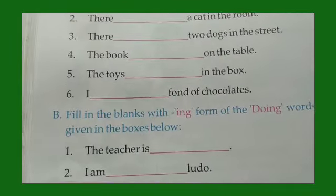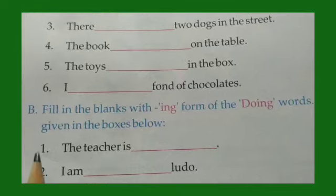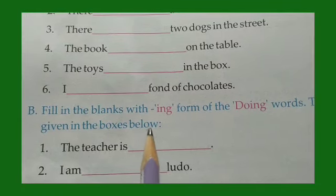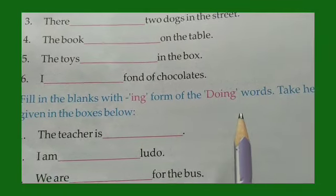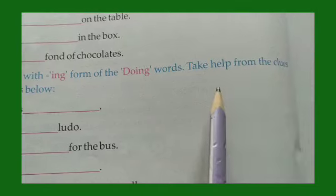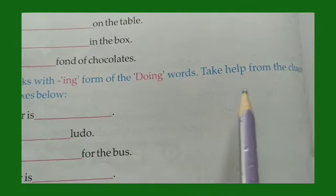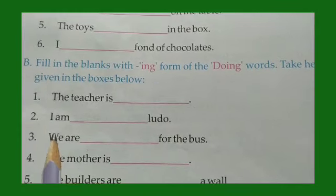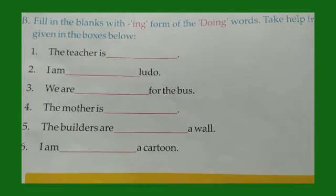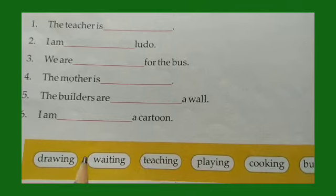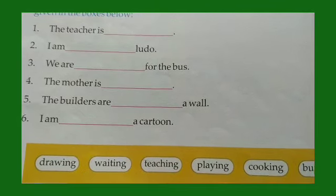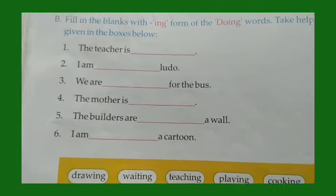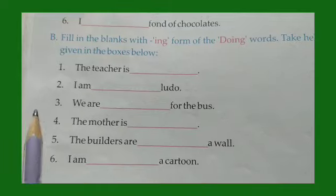Now we will do B: Fill in the blanks with the ing form of the doing words. Take help from the clues given in the boxes. So this we are going to do it.